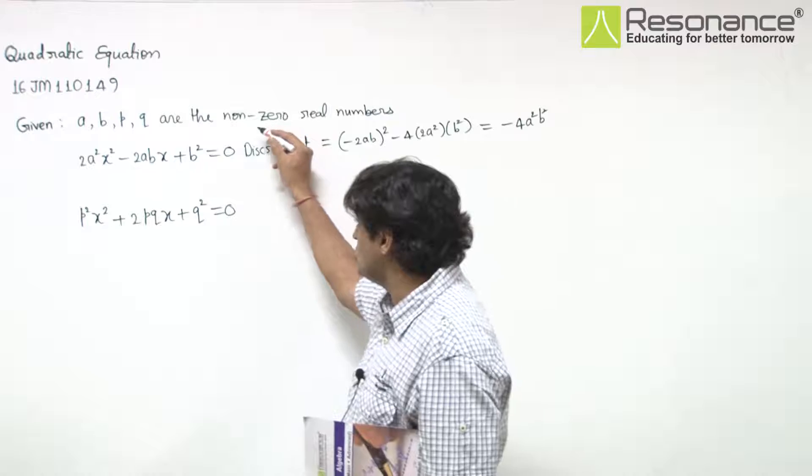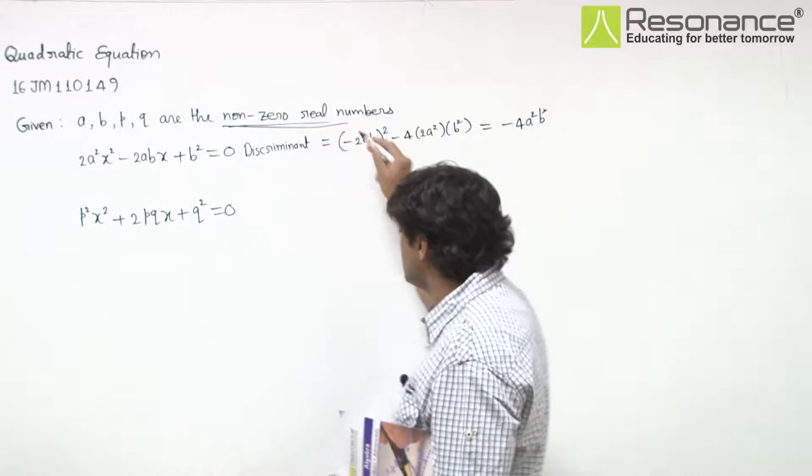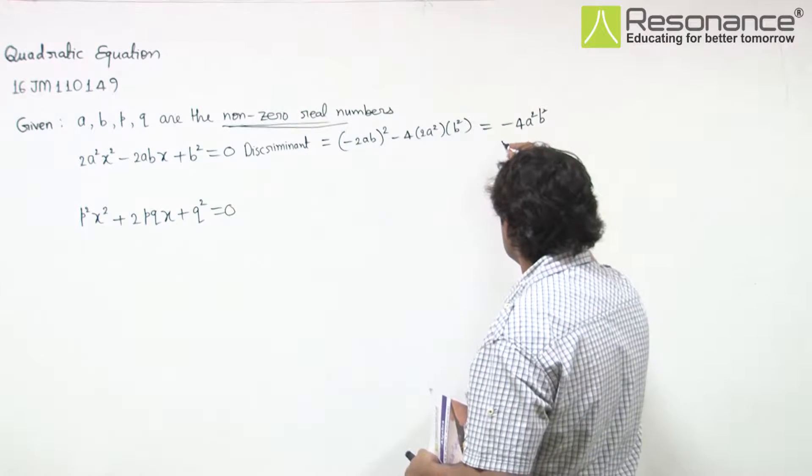Since a, b, p, q are non-zero real numbers, that means this is clearly negative.